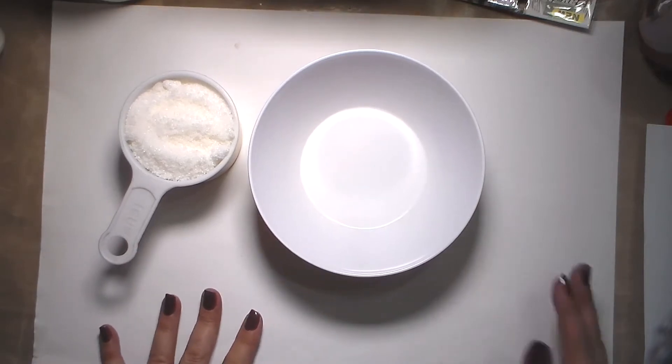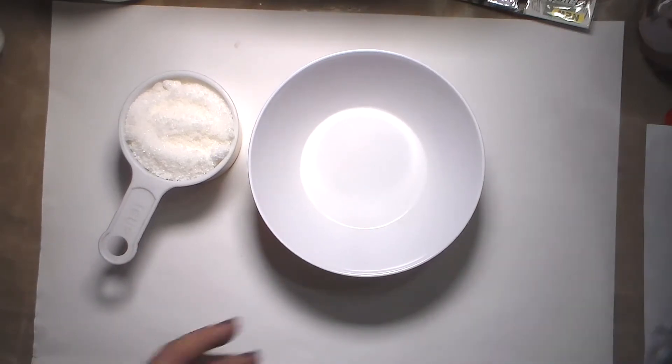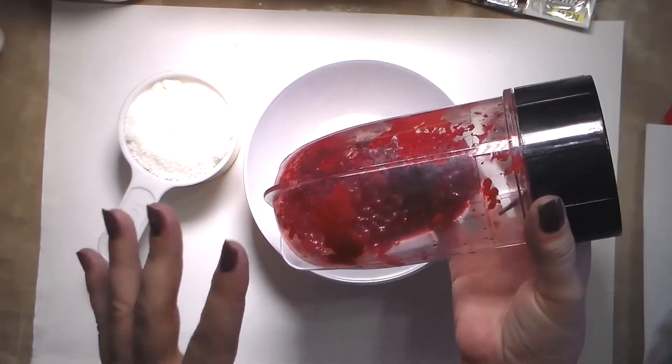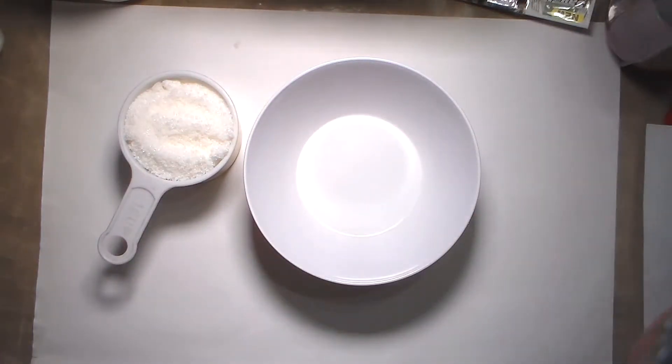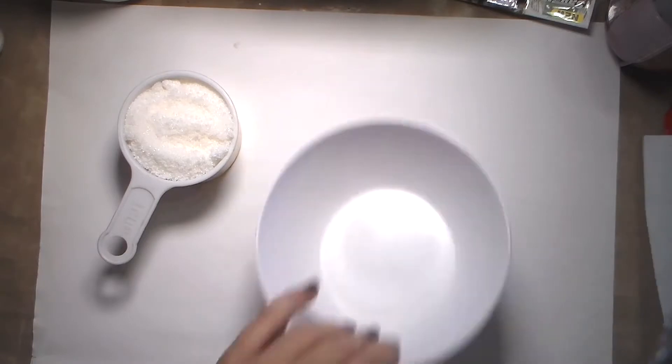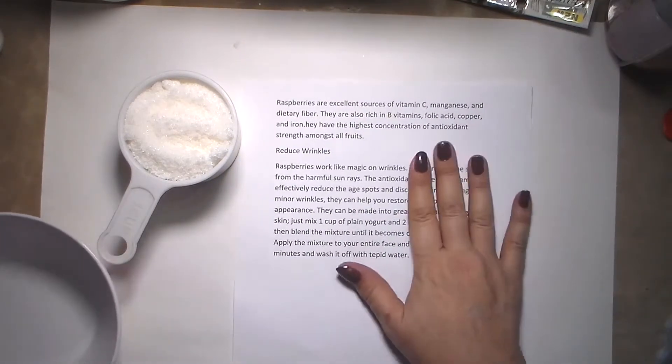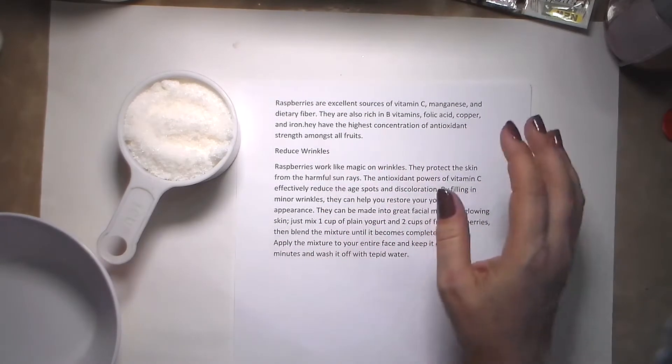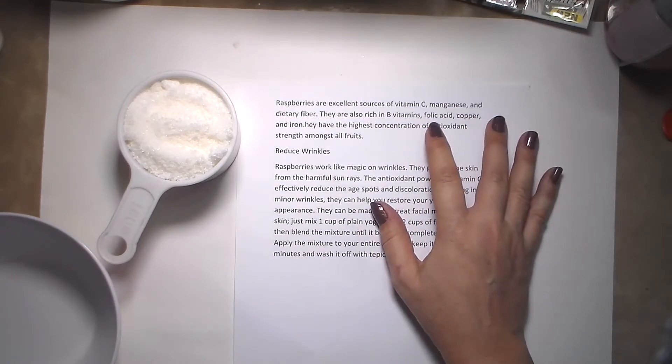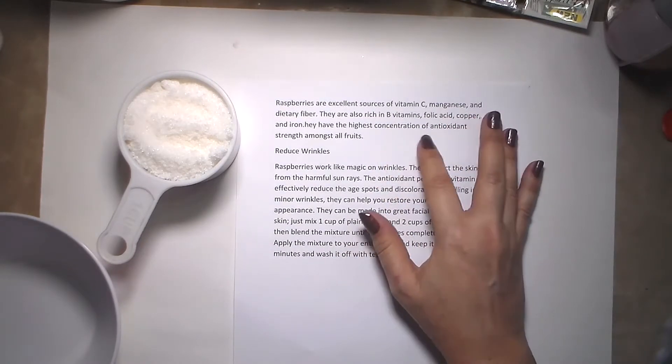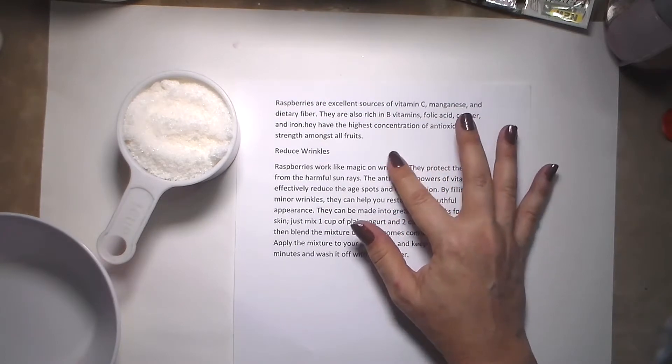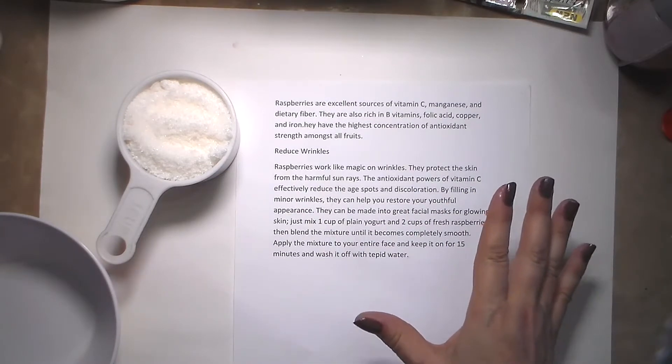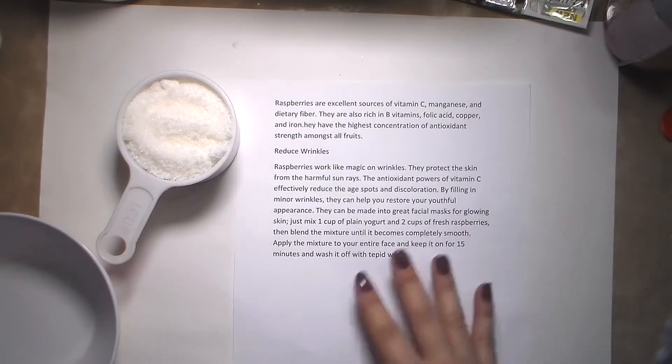I've seen this on Pinterest and I had these frozen fruits, so today I am going to use raspberries because that's my favorite fruit. It smells so good, it's a shame you can't smell it. I got a cheat sheet here to tell you all about raspberries. It's an excellent source of vitamin C, manganese, dietary fiber, vitamin B, folic acid, copper, iron, and has the highest concentration of antioxidants among almost all fruits. It's really good, it reduces wrinkles.